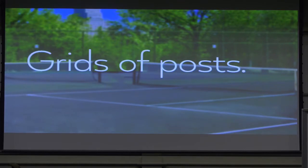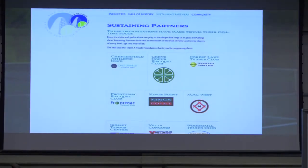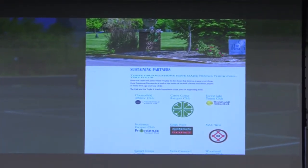Where do we use it? Grids of posts is an obvious answer. Instead of Flexbox in such a grid, instead of floats — floats are still relevant, or they will be again this summer. And instead of block and inline block, instead of Flexbox — this page from the St. Louis Tennis Hall of Fame used to be in Flexbox using row wrap. Here's the same page, now in Grid and with my favorite backstretch featured image thing.